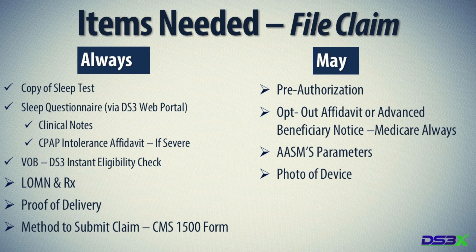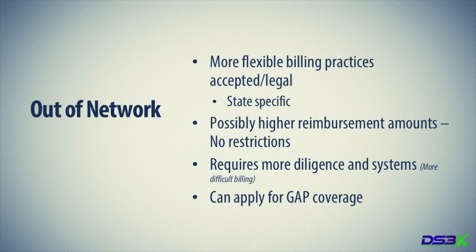You need a method to submit the claim — a 1500 form. In almost all cases you need a pre-authorization, but we have it in the 'may need' column because sometimes you don't. If it's Medicare, you need an opt-out affidavit or an advanced beneficiary notice. You may need the practice parameters from the American Academy of Sleep Medicine if they deny the claim. I typically take a photo of the device as well. Now we're going to talk about out-of-network billing for commercial insurance today, and next month we'll cover the Medicare model.